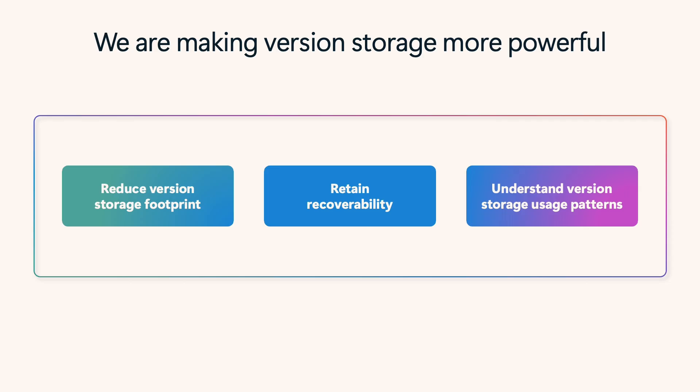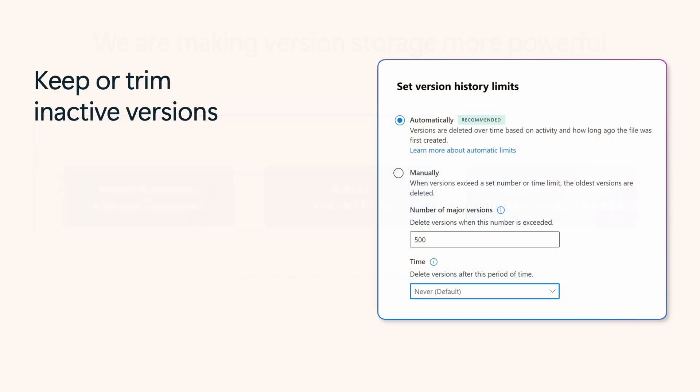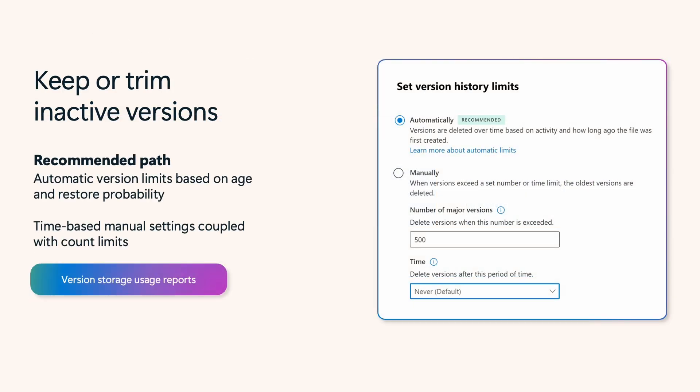Now you have better ways to manage version history while keeping essential data easily recoverable. Our enhanced version control gives admins more flexibility. Set automatic version limits based on age and restore probability, or use time-based limits to expire versions after a set period. These settings can be applied at the library, site, or tenant level. Plus, new version storage reports provide insights to make smarter decisions.